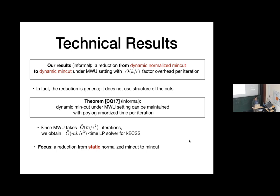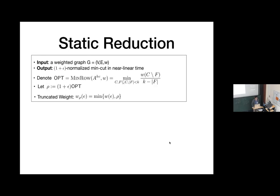Now I'll show the reduction to the min-cut. The input is a weighted graph G, and we want to output a 1-plus-epsilon approximation to the normalized min-cut in near-linear time. Let opt be the optimal solution to the normalized min-cut problem — minimizing over all cuts C and free sets F, normalized by K minus |F|. Define the threshold rho to be something like (1+epsilon)·opt. We define the truncated weight to be the minimum of w(e) and rho — if an edge is heavier than rho, we round it down to rho.